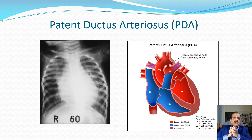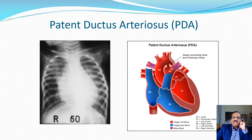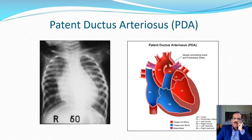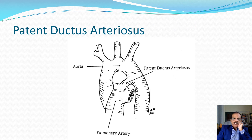Since many features are similar, I am including patent ductus arteriosus in this lecture. In PDA, there is a communication between the aortic arch and the pulmonary artery. This duct is normal for the fetus but should close at birth; if it does not, it is called patent ductus arteriosus. Oxygenated blood from the aorta flows into the pulmonary circulation and recirculates through the lungs, resulting in increased pulmonary circulation and pulmonary pressure.